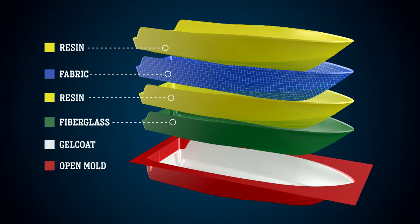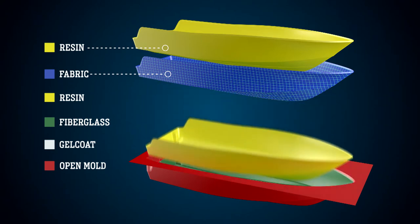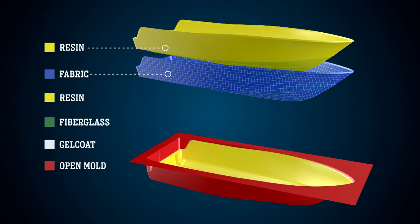In the next step, chopped fiberglass mixed with resin is sprayed into the mold at a uniform thickness for strength and puncture resistance.